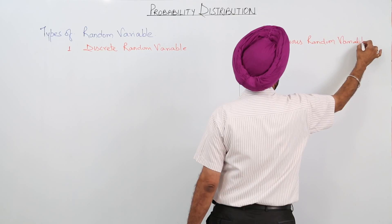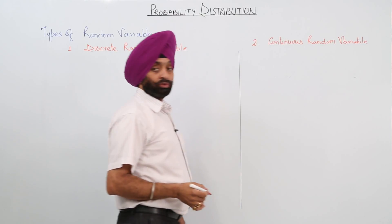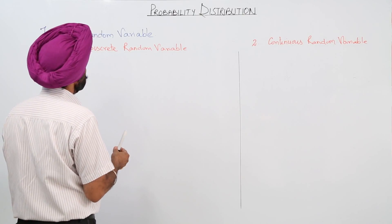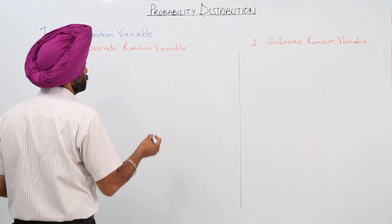In our topic probability distribution, we are going to go for the discrete part. Now what is a discrete random variable?